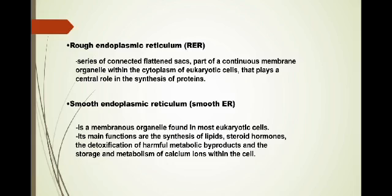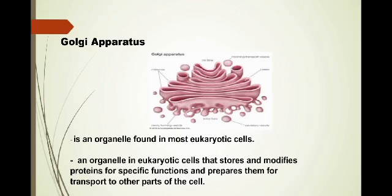The next part of eukaryotic cell is the Golgi apparatus. It is an organelle found in most eukaryotic cells. An organelle in eukaryotic cells that stores and modifies proteins for specific functions and prepares them for transport to other parts of the cell.